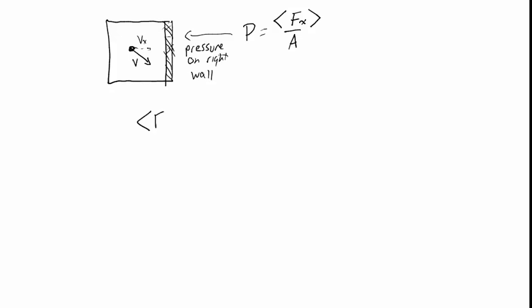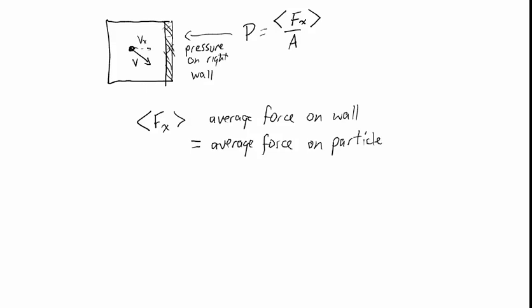The average force on the wall is also equal to the average force on the particle, because the only thing that ever collides with the wall is the particle. Newton's third law says if the particle exerts a force on the wall, the wall exerts a force on the particle. The average force on the particle, according to Newton's second law, is equal to the mass of the particle times its average horizontal acceleration, which is its mass times the average change in horizontal velocity divided by the change in time.